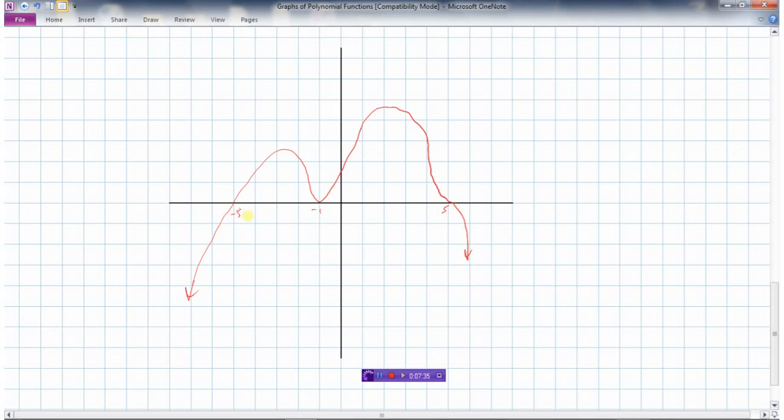So it looks like I have 1 root at negative 5, so that would be a factor of x plus 5. I have a double root because it's bouncing off the x-axis at minus 1, so that would be an x plus 1 squared. And then here I have a triple root because it's doing a little squiggle through the x-axis at 5, so this would be x minus 5 all cubed.